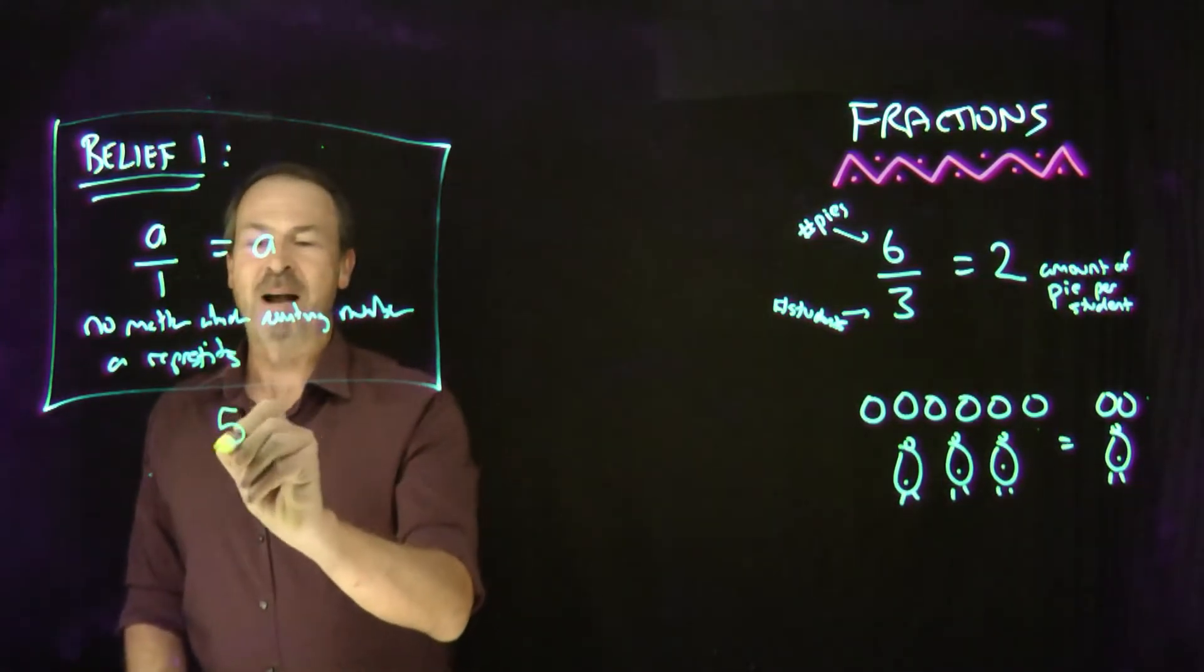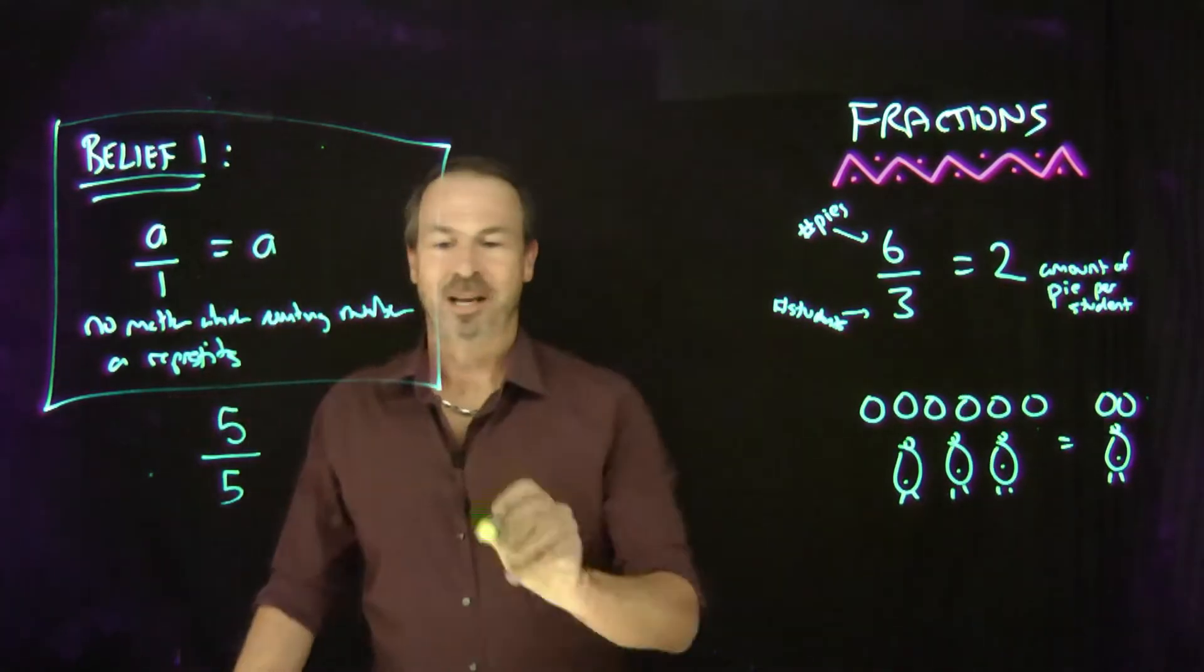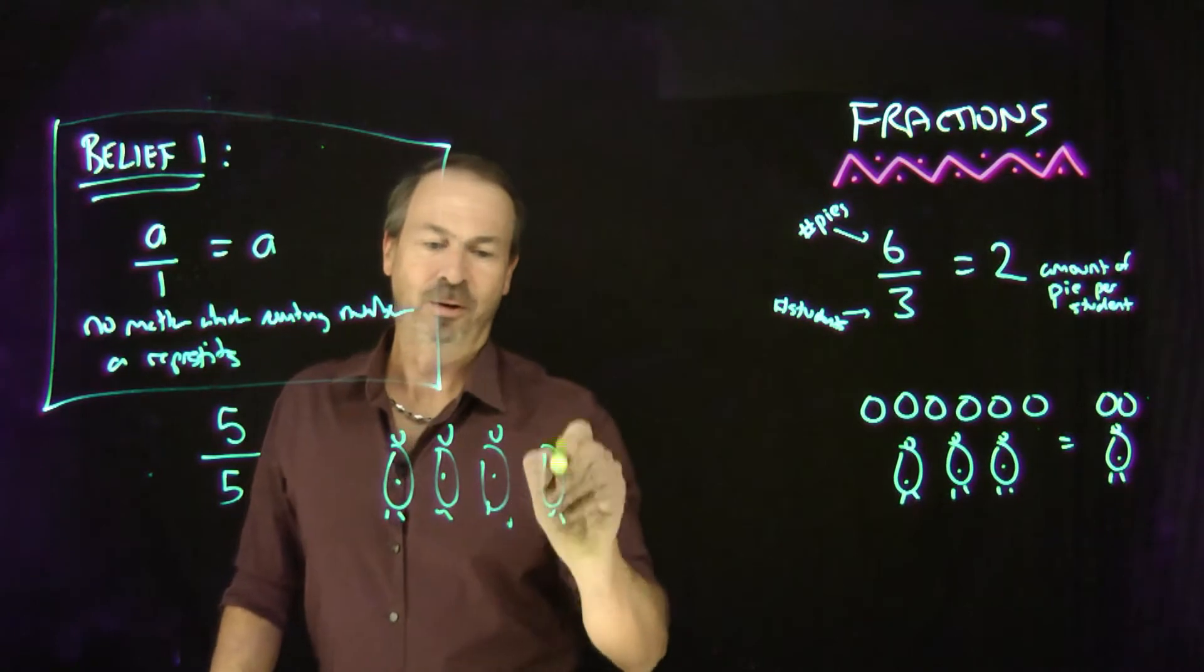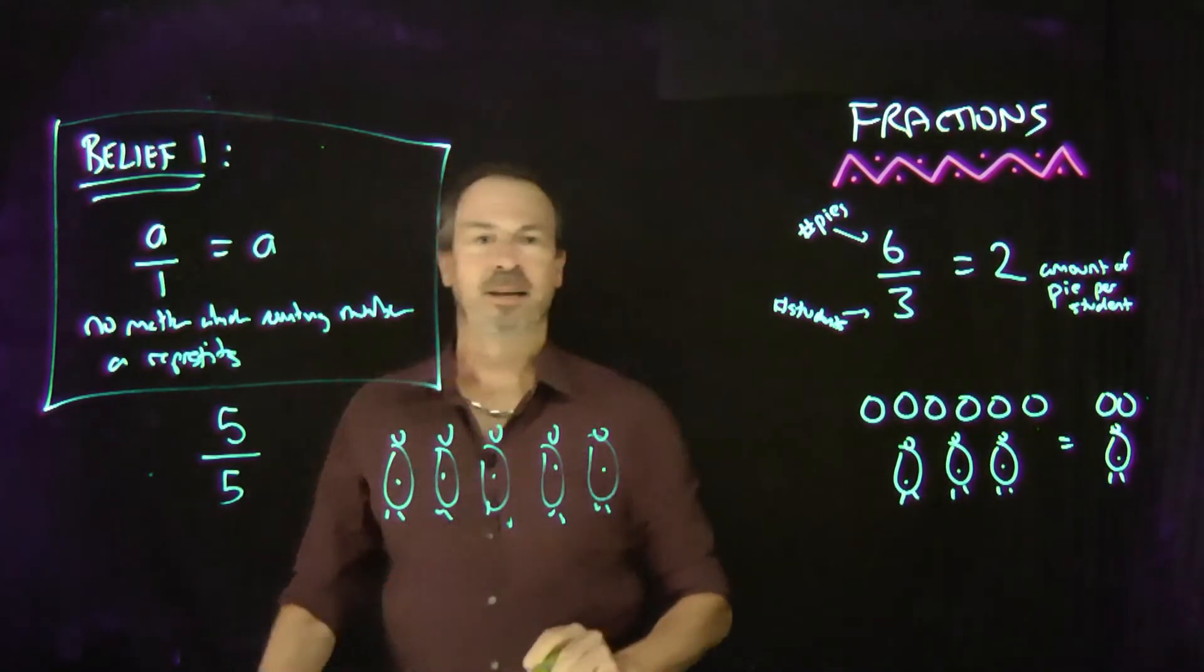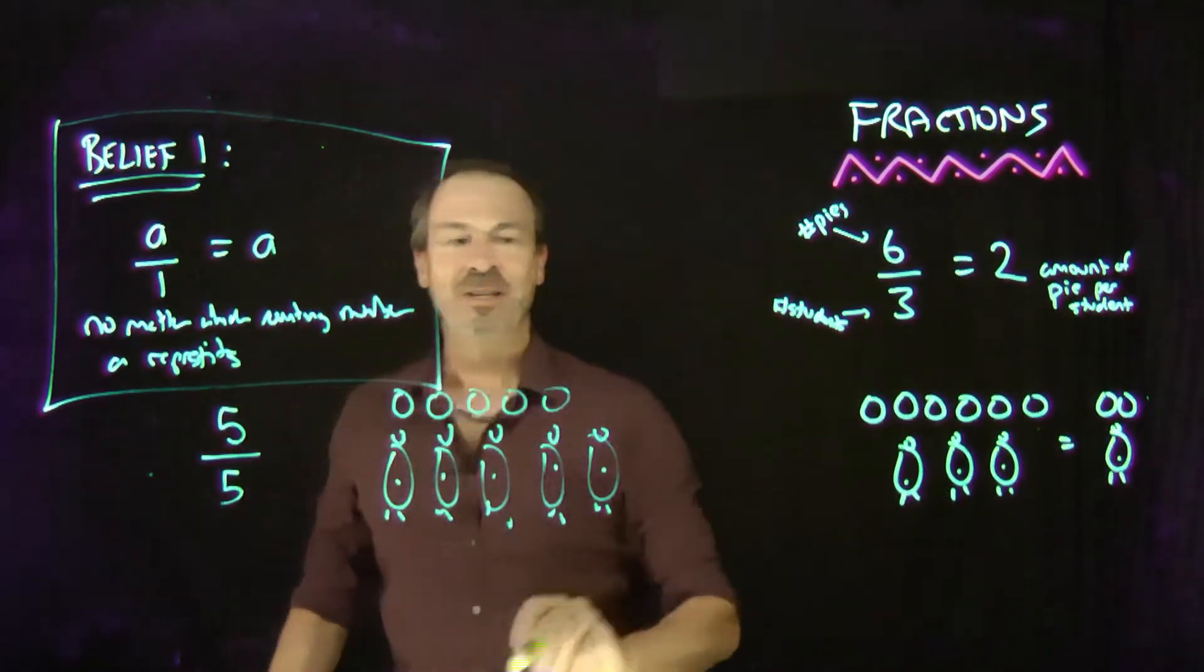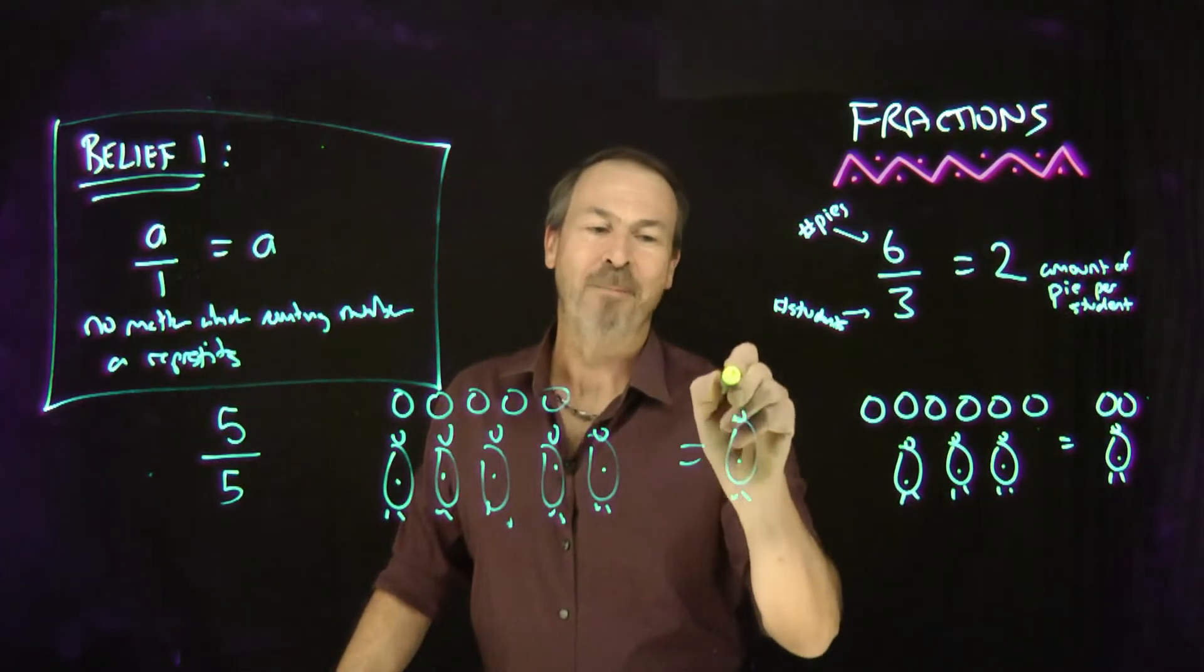Suppose I had, say, 5 pies for 5 students. I'll draw it out—5 students. It'll take me longer to draw this out than to say it. I'll have 5 pies to be shared equally per student. Well then, clearly that's 1 pie per student.